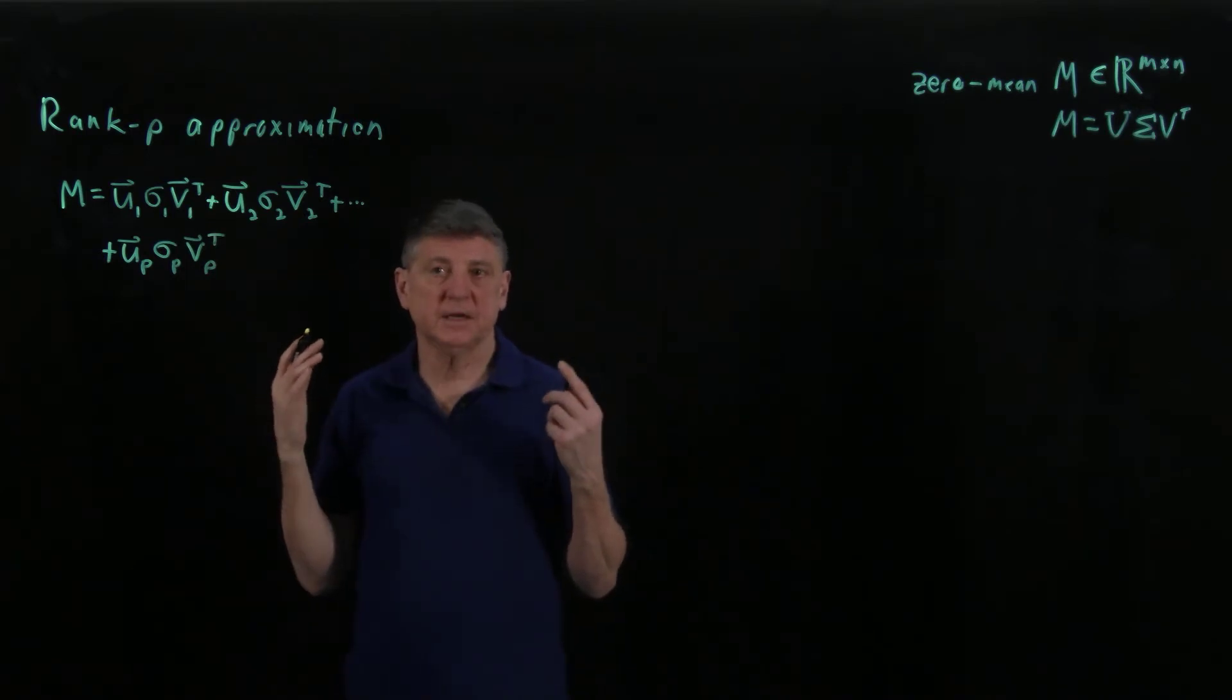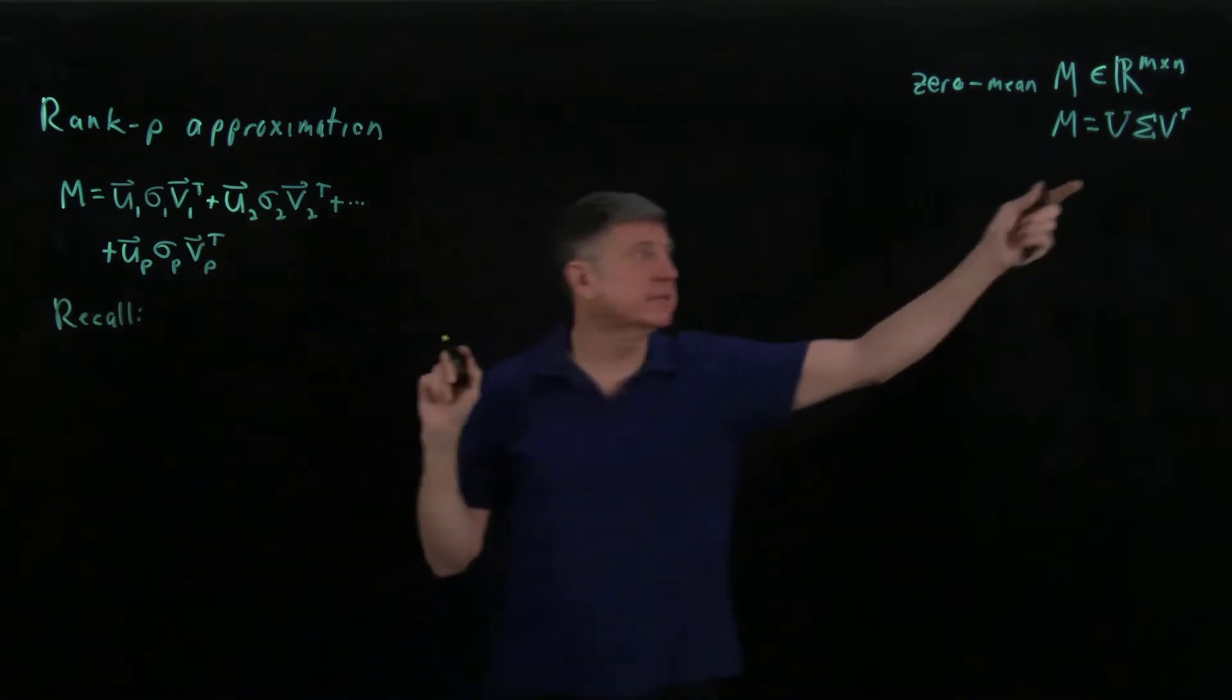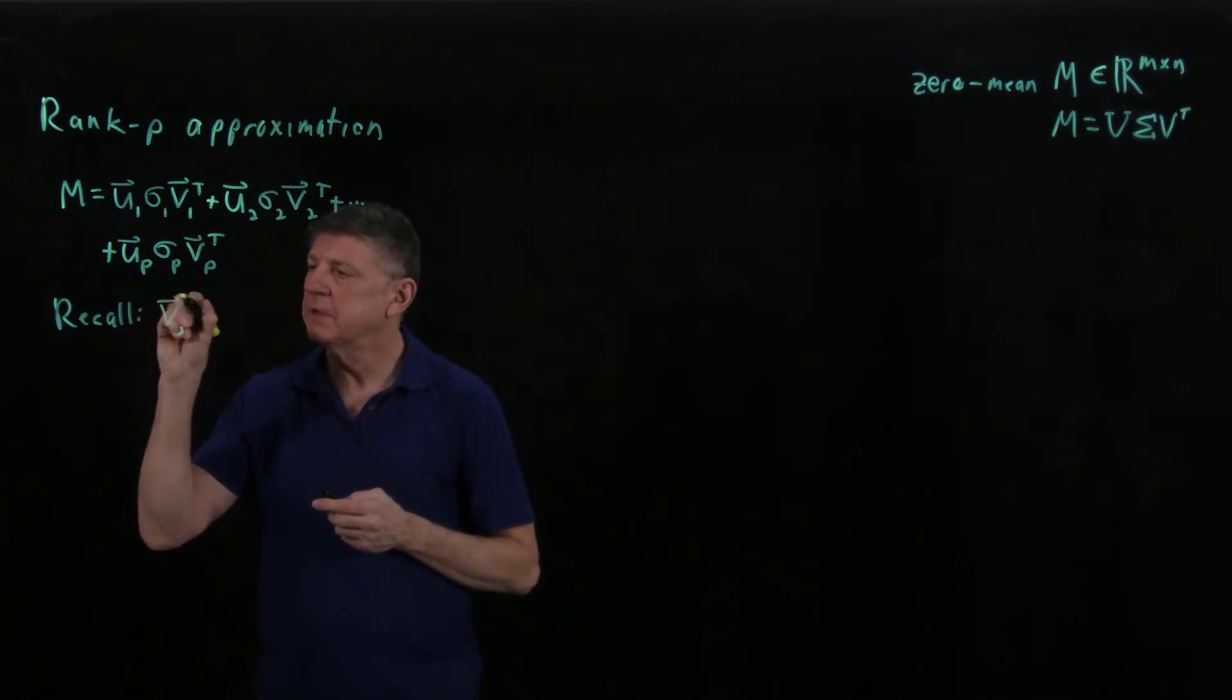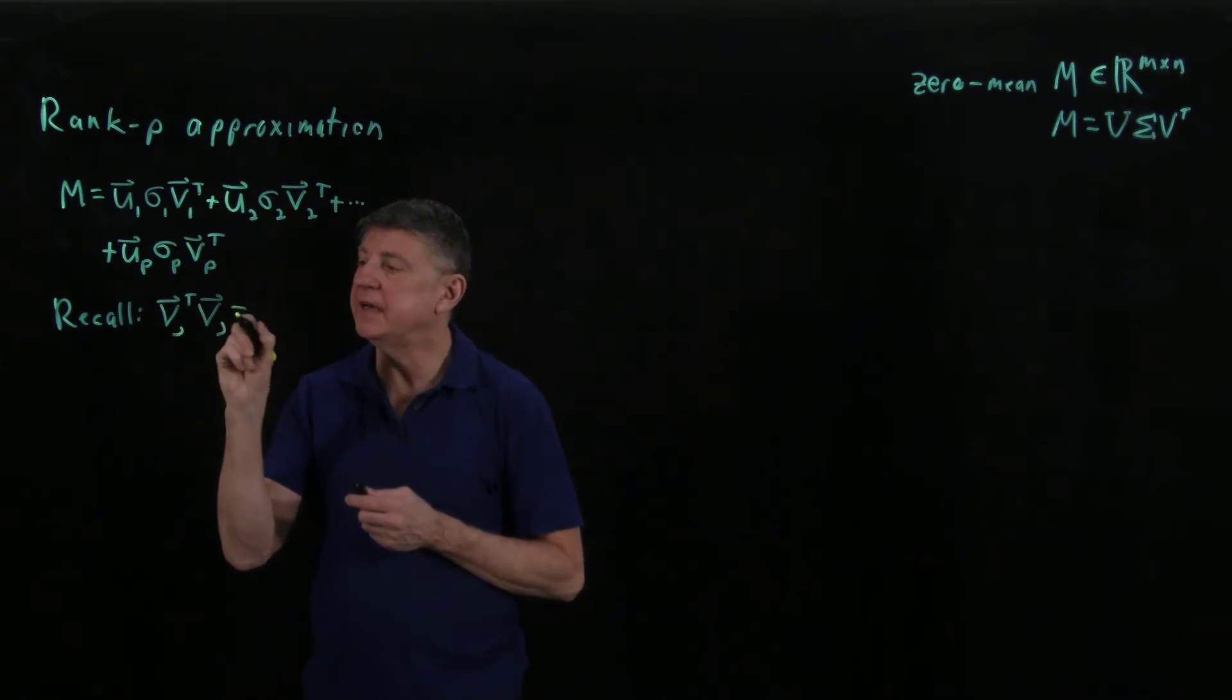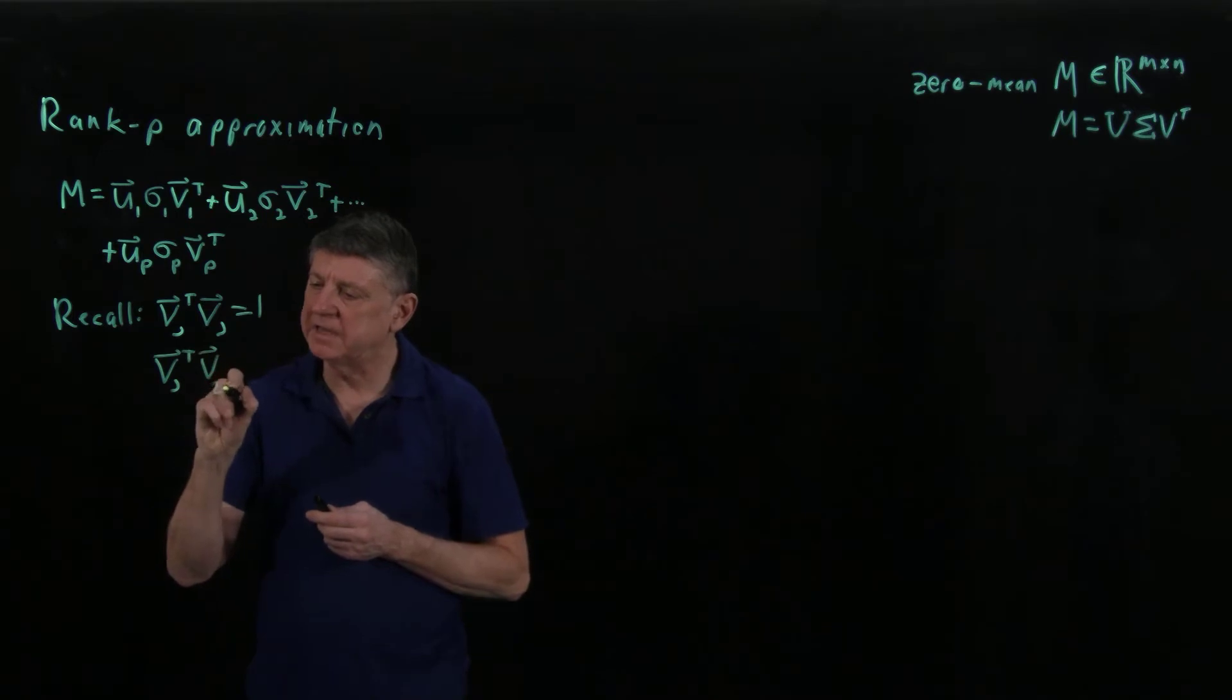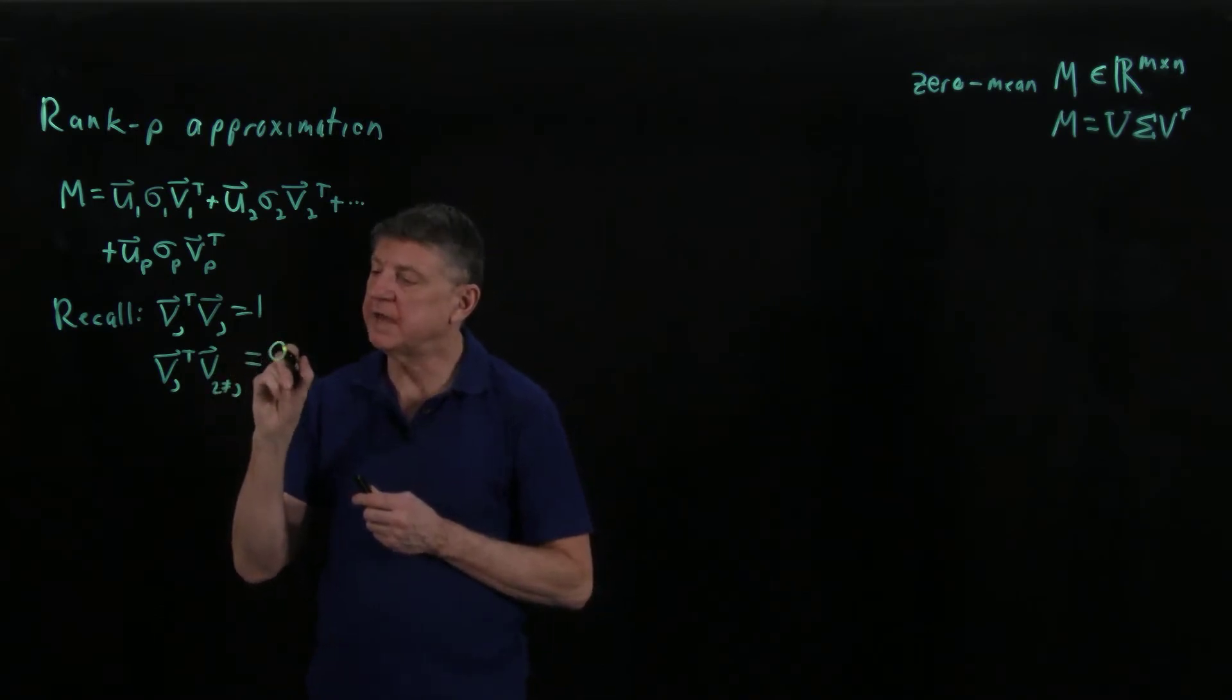So let's explore what happens when we multiply this. Let's recall that the matrix V is orthogonal, and that means that its columns form an orthonormal basis. So that means if I take column J and transpose it and multiply it by column J, that's the same as VJ dot VJ, and that has to equal one. And then if I take VJ, transpose it and multiply it by any I that is not equal to J, well, because the columns form an orthonormal basis, the Jth column is orthogonal to every other column, and so that has to equal zero.